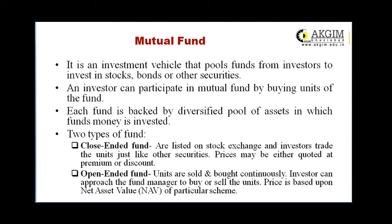There are two types of mutual funds. First, close-ended schemes, which are listed on stock exchanges — the investor can trade the units in the stock markets just like other securities, and the price may be quoted at a premium or at a discount. The other type is open-ended schemes, where units are sold and bought continuously. Investors can approach the fund managers directly to buy or sell the units. The price of the unit is based on the net asset value of the particular scheme, also known as NAV.